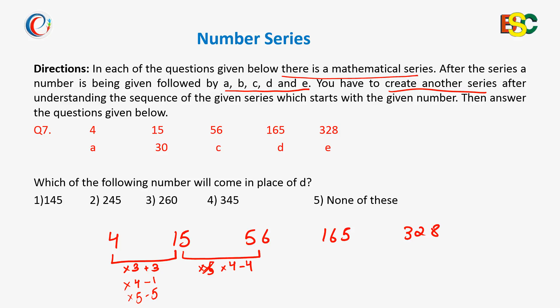So in both these patterns we can find something common that it is into 4 minus 4 and it is into 5 minus 5. They are successive numbers 5, 4 and they are getting multiplied and then subtracted.